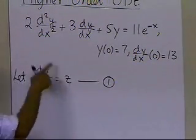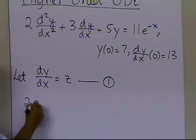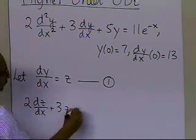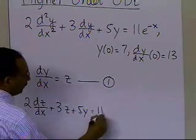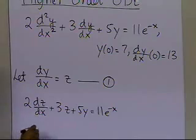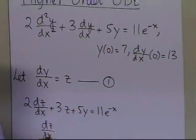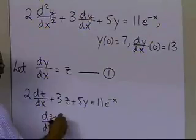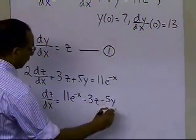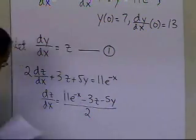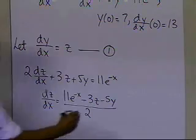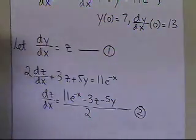When we substitute dy/dx = z into the original equation, we get 2·dz/dx plus 3z plus 5y equals 11·e^(−x). We can then rewrite this in the form needed for our numerical methods — for Heun's method — giving dz/dx = (11·e^(−x) − 3z − 5y) / 2. That becomes the second differential equation we need to solve.